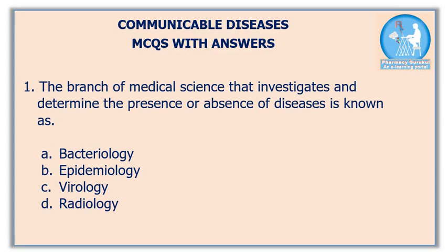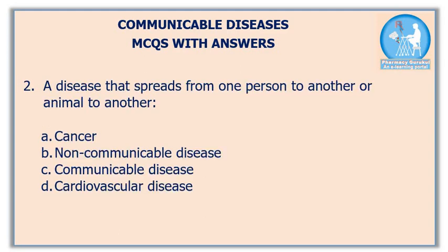The correct answer is option B: Epidemiology. Second question: a disease that spreads from one person to another, or animal to another — first option cancer, second non-communicable disease, third communicable disease, fourth cardiovascular disease.